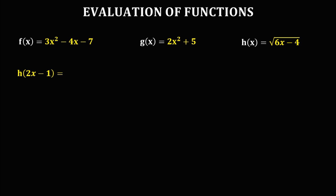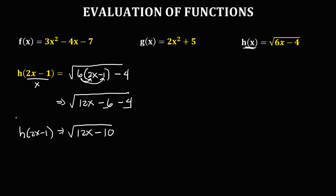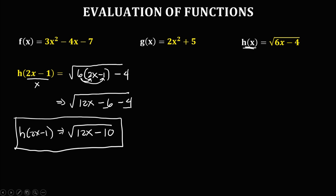For h of 2x minus 1: from h of x, x is equal to 2x minus 1, so we have the square root of 6 times (2x minus 1), then minus 4. Simplifying: 6 times 2x is 12x, and 6 times negative 1 is negative 6, then minus 4. Since both are negative, add them: 6 plus 4 is 10. Therefore, h of 2x minus 1 is equal to the square root of 12x minus 10.